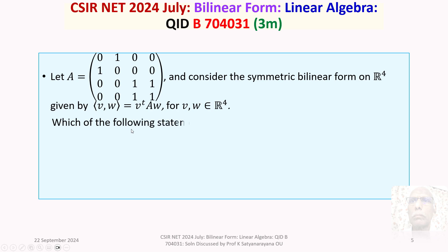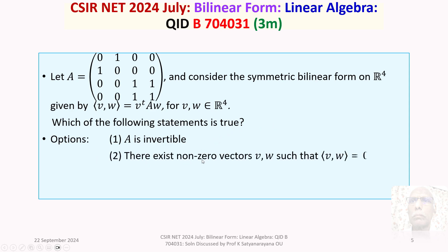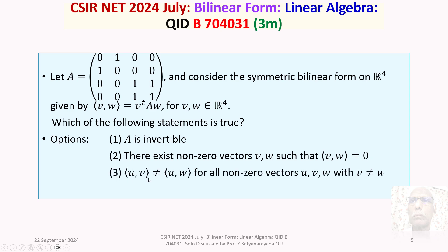Which of the following statements is true? We are given 4 options. Option 1: A is invertible. Option 2: there exist non-zero vectors V, W such that bracket(V, W) is 0. Option 3: bracket(U, V) not equal to bracket(U, W) for all non-zero vectors U, V, W with V not equal to W. Option 4: every eigenvalue of A² is positive.